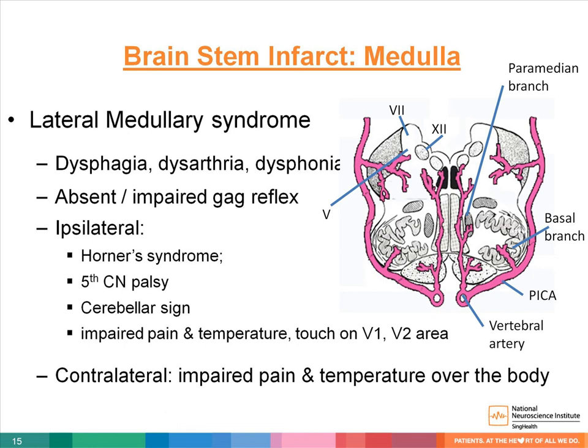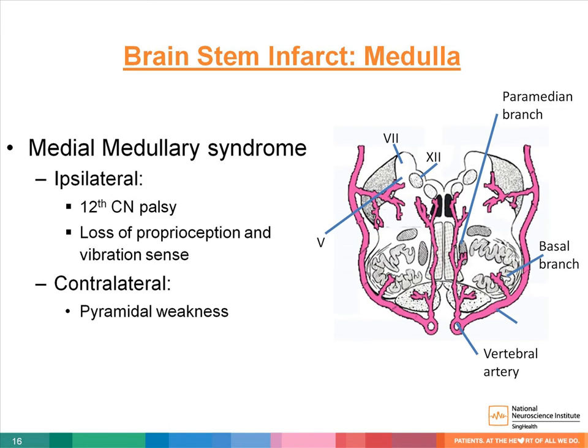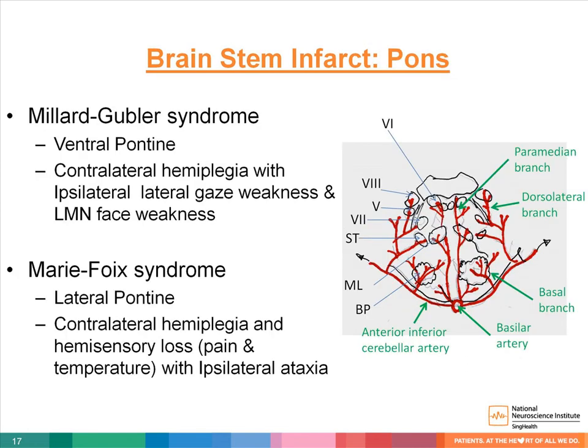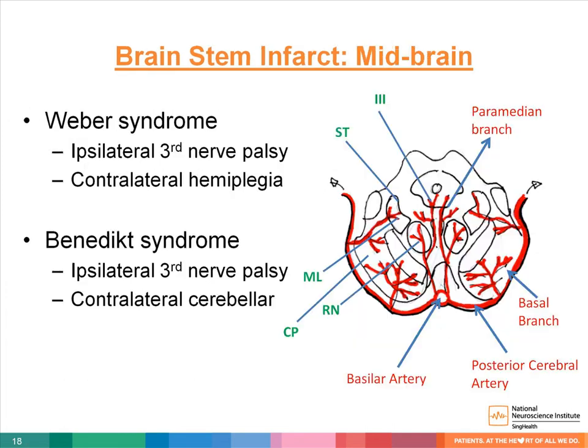Contralateral deficits in lateral medullary syndrome include impaired pain and temperature over the body. Another less common medullary syndrome, the medial medullary syndrome, produces ipsilateral twelfth nerve palsy and loss of proprioception and vibration sense, with contralateral pyramidal weakness. Moving on to pontine syndromes, there are Millard-Gubler syndrome and Marie-Foix syndrome, though these are rarely seen in clinical practice. Certain midbrain syndromes are also shown here.